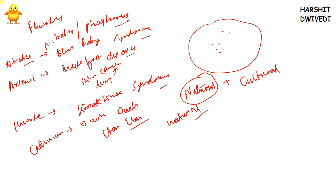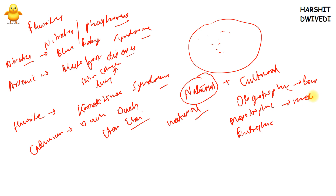In eutrophication, as nutrients increase, plankton populations increase and consume more oxygen, decreasing dissolved oxygen levels. Small fish die, then bigger fish die, affecting organisms at higher trophic levels. Lakes can be categorized into three types: oligotrophic (very low nutrient content), mesotrophic (moderate nutrient content), and eutrophic (very high nutrient content). In India, most lakes are either eutrophic or mesotrophic due to high levels of organic and inorganic waste entering the water.